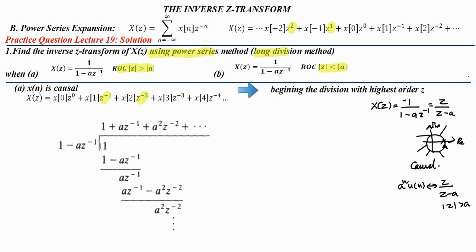By using the standard result, you can directly write the answer. But in this question it is indicated that we need to use the power series method, or long division. So we cannot approach it that way. This is the causal signal, so we need to start our division by using the highest order of z. If you look at the denominator part, here you can see z raise to minus 1, and here it is a constant, meaning z power is z raise to 0. So the highest power of z is a constant, and we will start the division with the constant value.